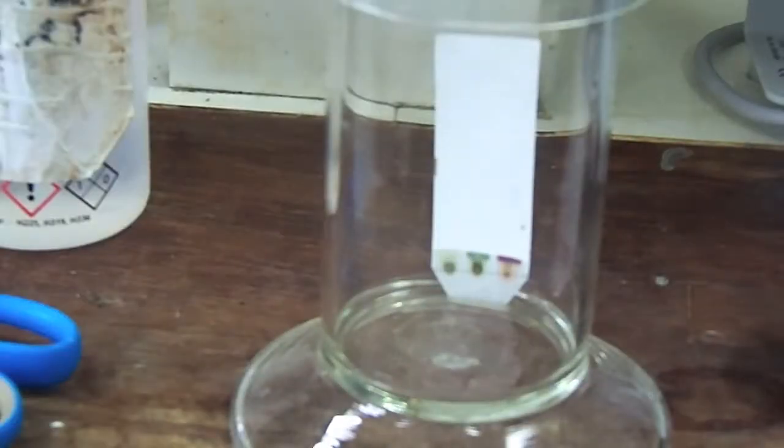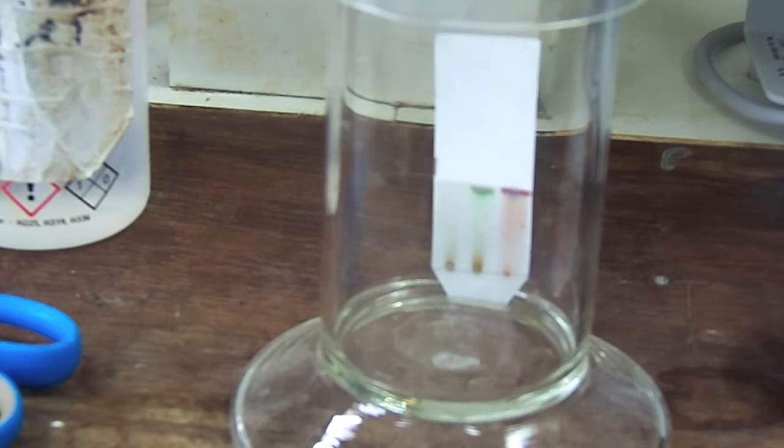TLC or thin layer chromatography is used to check which fractions your porphyrin is in. Use a suitable solvent, and a reference sample if you have one. As you can see here, fraction 1 has nothing in it, fraction 2 has an unwanted green by-product, and fraction 3 has the red porphyrin product we are looking for.